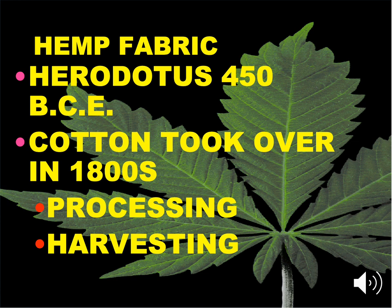Hemp fabric was mentioned by Herodotus in 450 BCE - the father of history. He came up with the 'neither snow nor rain' motto for the mailman; we borrowed that from him. Cotton really did take over in the 1800s in part because of processing and harvesting issues. In Thomas Jefferson's diary it says the harvesting and processing of hemp is really hard on his slaves - that's at least a contributor to why cotton seemed to do so well. Then the cotton gin was invented and really took cotton a step ahead. We didn't have decorticators for the hemp stock that worked really well.